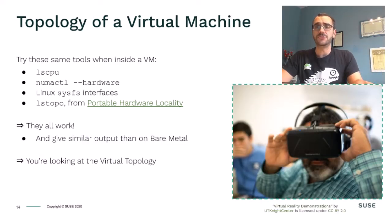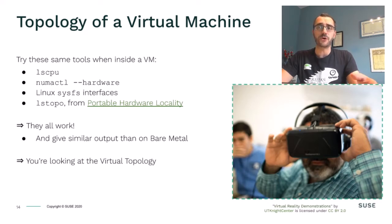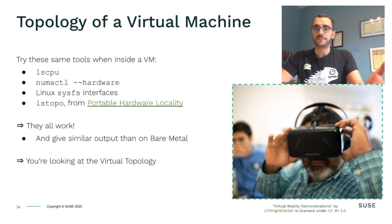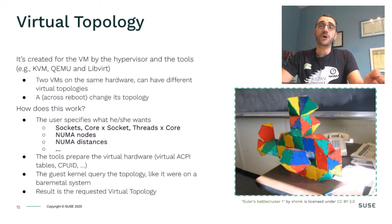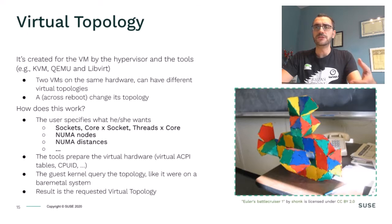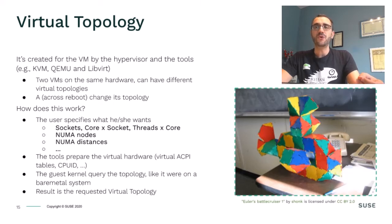If you have ever tried using any of these tools inside a virtual machine, you know it is very much possible. They work and the output has the same format and look as what we see on bare metal. But of course, what you are looking at is the virtual topology of the VM. It is the job of the hypervisor and other components of the virtualization stack to put together the necessary pieces, like CPUID bits and virtual ACPI tables, so that the OS running inside the VM will configure itself as if it were running on hardware with the topology the user requested.